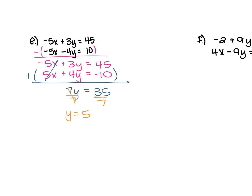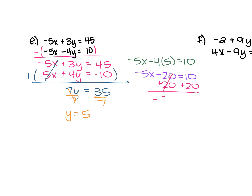Choose one of the original equations — doesn't matter which — and solve for x. Using the bottom equation: negative 5x minus 4 times 5 equals 10. Negative 4 times 5 is negative 20, so negative 5x minus 20 equals 10. Add 20 to both sides to get negative 5x equals 30. Divide each side by negative 5 and x equals negative 6. So x is negative 6 and y is 5 — the ordered pair is (negative 6, 5).